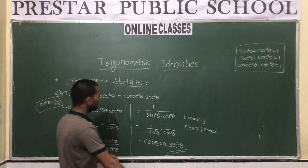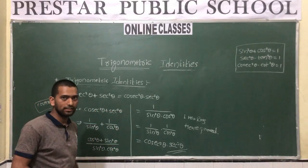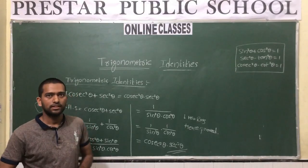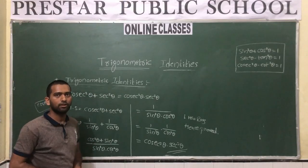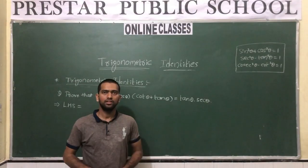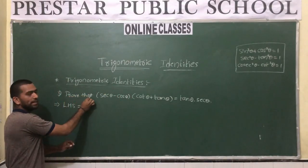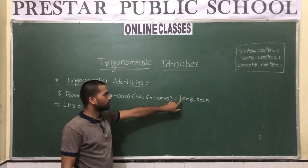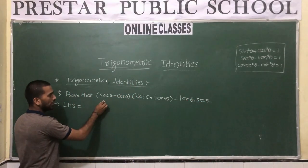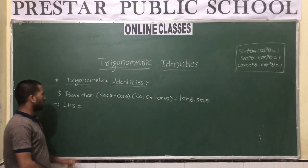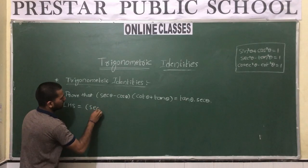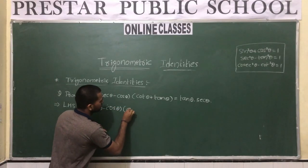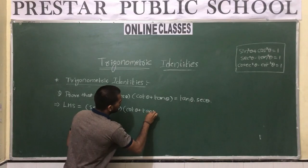If you know the formulas and identities clearly, then each and every problem in trigonometry can be solved. Let us discuss one more problem. Prove that (secθ - cosθ)(cosθ + tanθ) = tanθ · secθ. We need to prove LHS equals RHS. Let us take the left-hand side terms: (secθ - cosθ)(cosθ + tanθ).